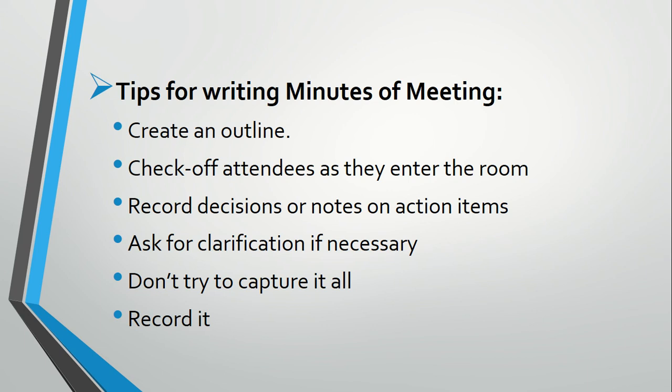If you don't know the persons who are attending the meeting personally, let people introduce themselves at the start of the meeting or circulate an attendance list they can check off themselves. Attendance list circulate ki ja sakti hai ki jit members present hain woh us mein attendance mention kar de — baad mein is ko check kia ja sakta hai ki kaun meeting attend karne se raha gaya hai. Record decisions or notes on action items in your outline as soon as they occur, to be sure they are recorded accurately.